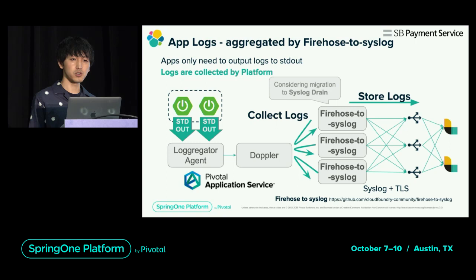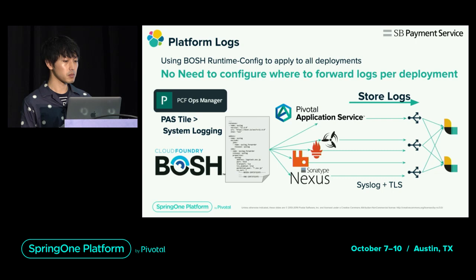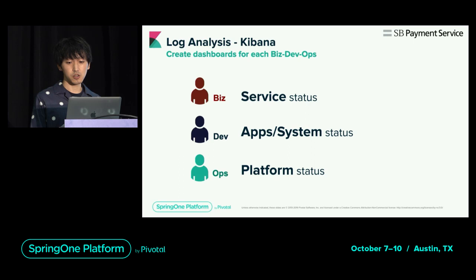For the platform log, the destination is set for each instance by the BOSH runtime config mechanism. Since individual settings are not required, operational load is reduced. Introducing Kibana dashboards for log browsing: we create dashboards for each purpose of Biz/Dev/Ops so that we can check each operation's status — service status for Biz, apps and system status for Dev, and platform status for Ops.